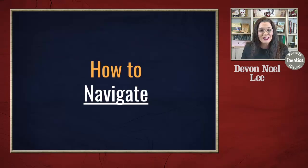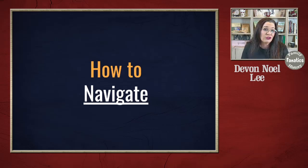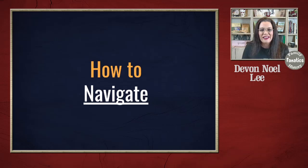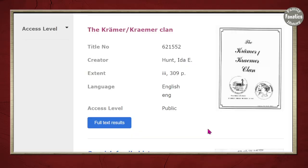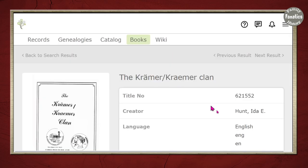Next we're going to go over how to use the different features on the book viewer page. Initially it was a little tricky to understand and utilize, but with a little practice you're going to do just fine. Let's say you found this book — how are you going to navigate? Make sure you click on the title of the book.